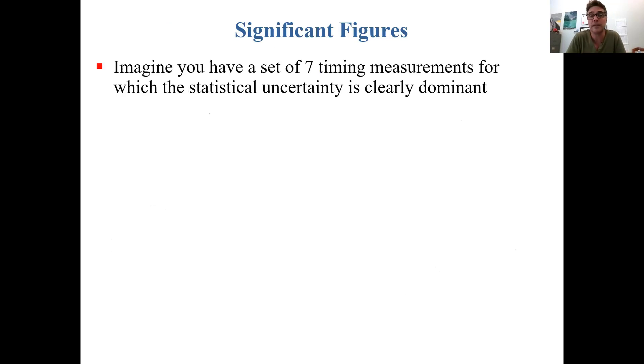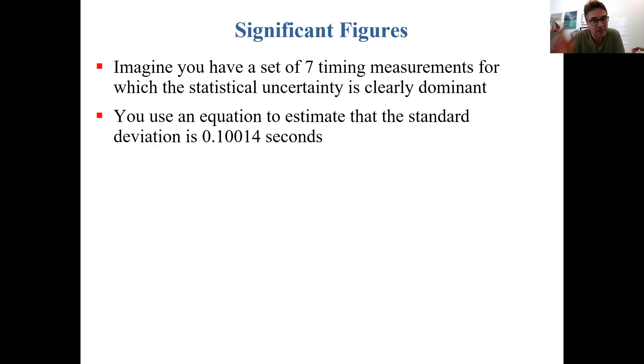Let's talk about significant figures. Imagine you have a set of seven timing measurements for which the statistical uncertainty is clearly dominant, like that Excel example we showed earlier. You use an equation to estimate that the standard deviation is 0.10014 seconds.